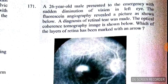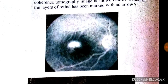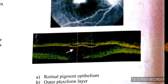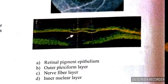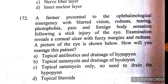Question number 171: a 26-year-old male presented to the emergency with sudden diminution of vision in the left eye. Fluorescein angiography revealed a picture as shown below; a diagnosis of retinal tear was made. The optical coherence tomography image is shown below. Which layer of the retina is marked with an arrow? The answer is A — retinal pigment epithelium.